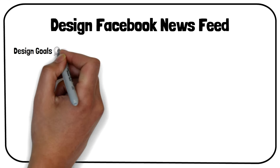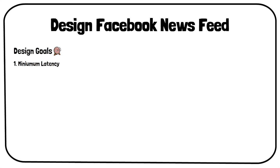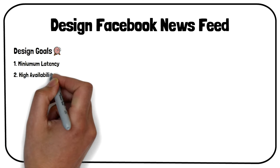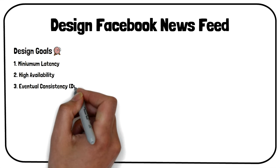While designing this system, we should ensure that the system has minimum latency, so the user does not experience any significant lag during the newsfeed generation. The final design should be highly available, because if Facebook's newsfeed is down, it will be all over the news. Since we are designing a highly available system, and as we know from the CAP theorem, we can have either high availability or high consistency. Thus, we will aim for an eventually consistent system.